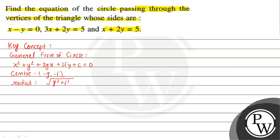We will use this general form concept to solve this question. The given equations of the triangle's sides are: equation 2 is x minus y equal to 0, equation 3 is 3x plus 2y equal to 5, and equation 4 is x plus 2y equal to 5.